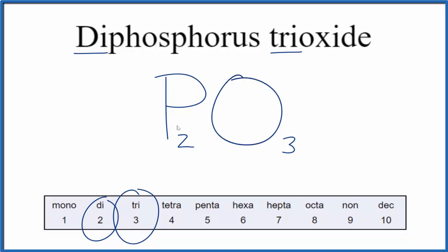If you were given this formula P2O3 and asked to write the name for diphosphorus trioxide, you'd need to recognize that you have phosphorus and oxygen, they're both nonmetals, then you'd use these prefixes for the two and the three to give you the formula diphosphorus trioxide.